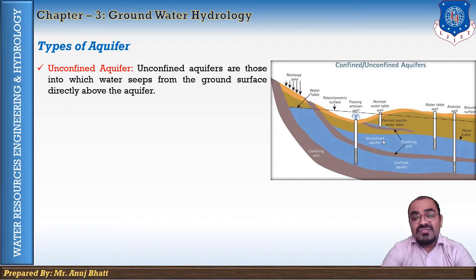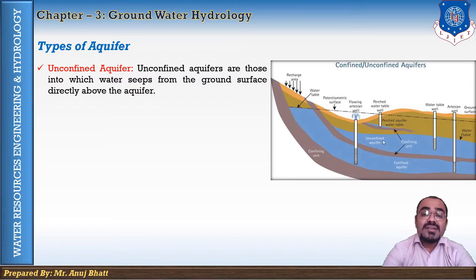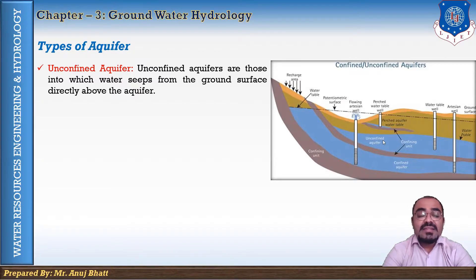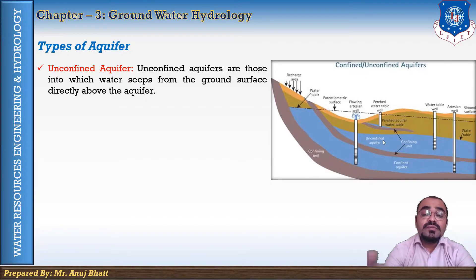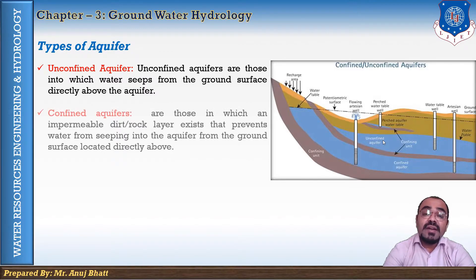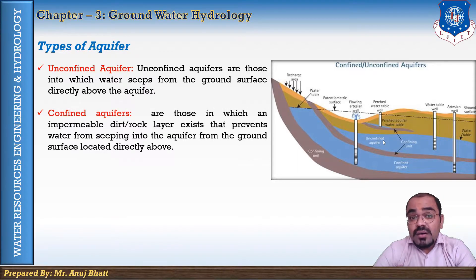When recharge is less, previously stored water flows out towards streams, wells, or any points of groundwater discharge. A well driven into an unconfined aquifer will indicate a static water level corresponding to the water table level at that particular location.